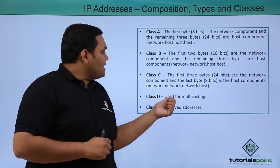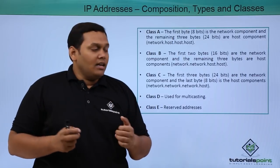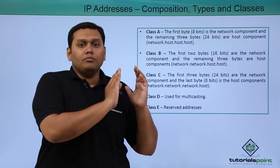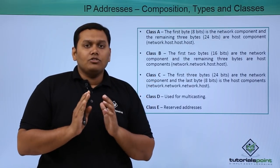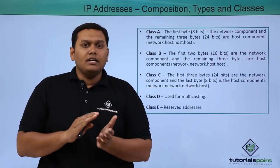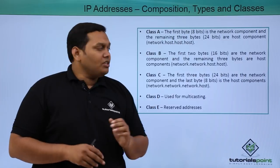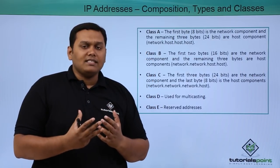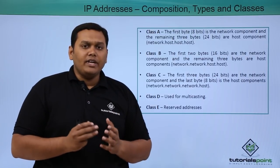Coming to Class C, the first three octets come under the network component, and the last one comes under the host component. Class D is used for multicasting, and Class E is reserved addresses for military departments, etc. These are not used in real-time network environments. These are the classifications based on the networks and host parts. We will be discussing about these classes in the next videos in depth.